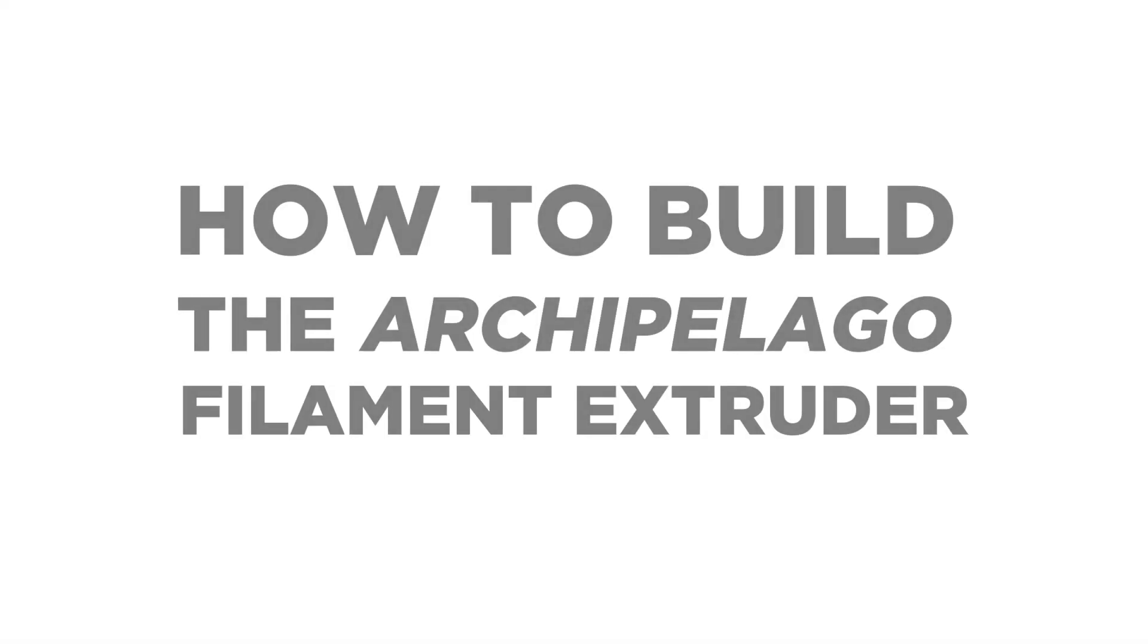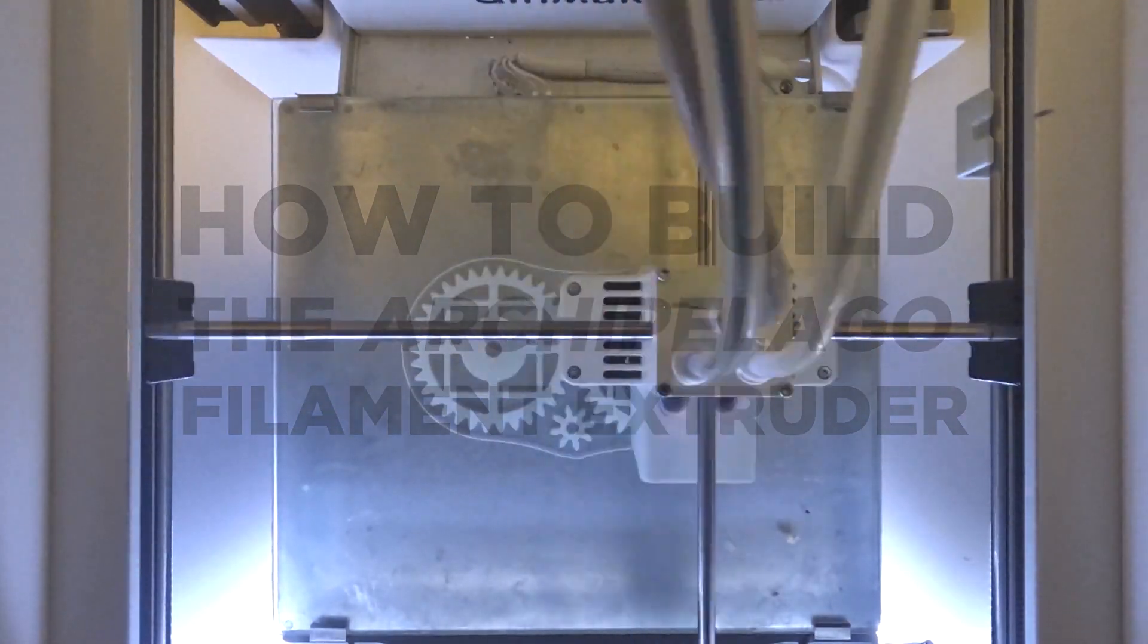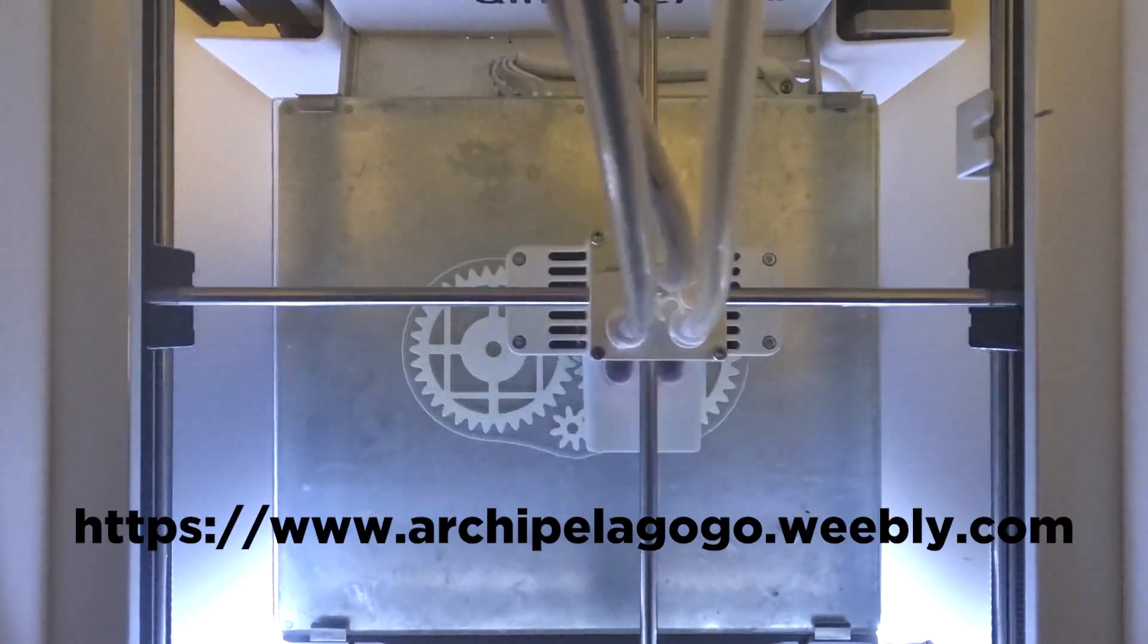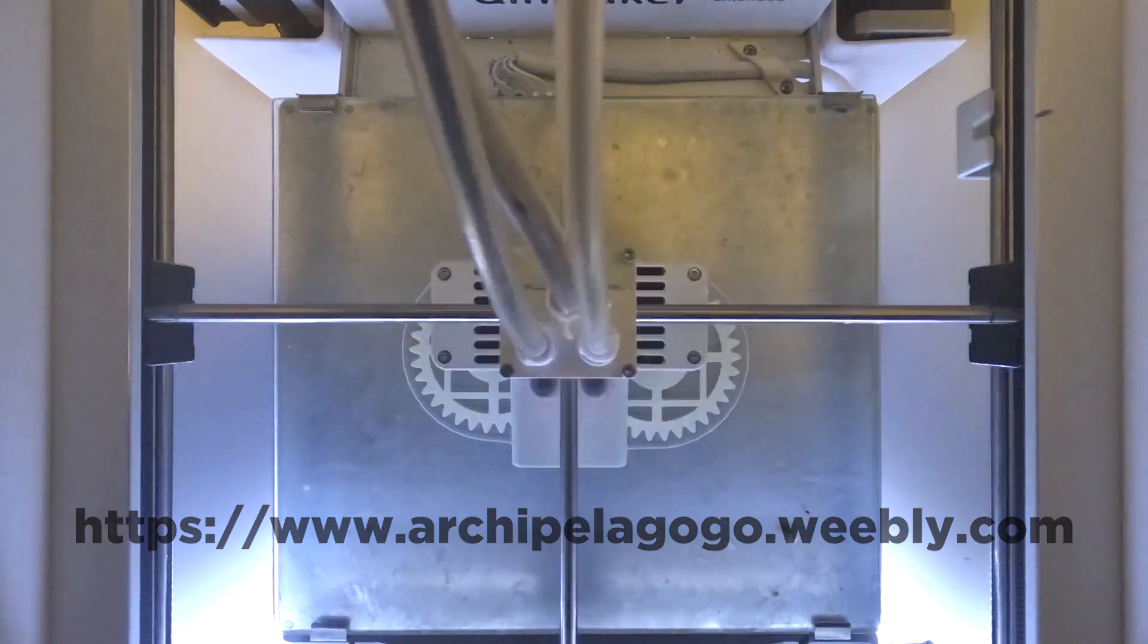To make your filament extruder, first print the frame and gears for the Archipelago PET filament extruder. You can find the files on the Archipelago website.